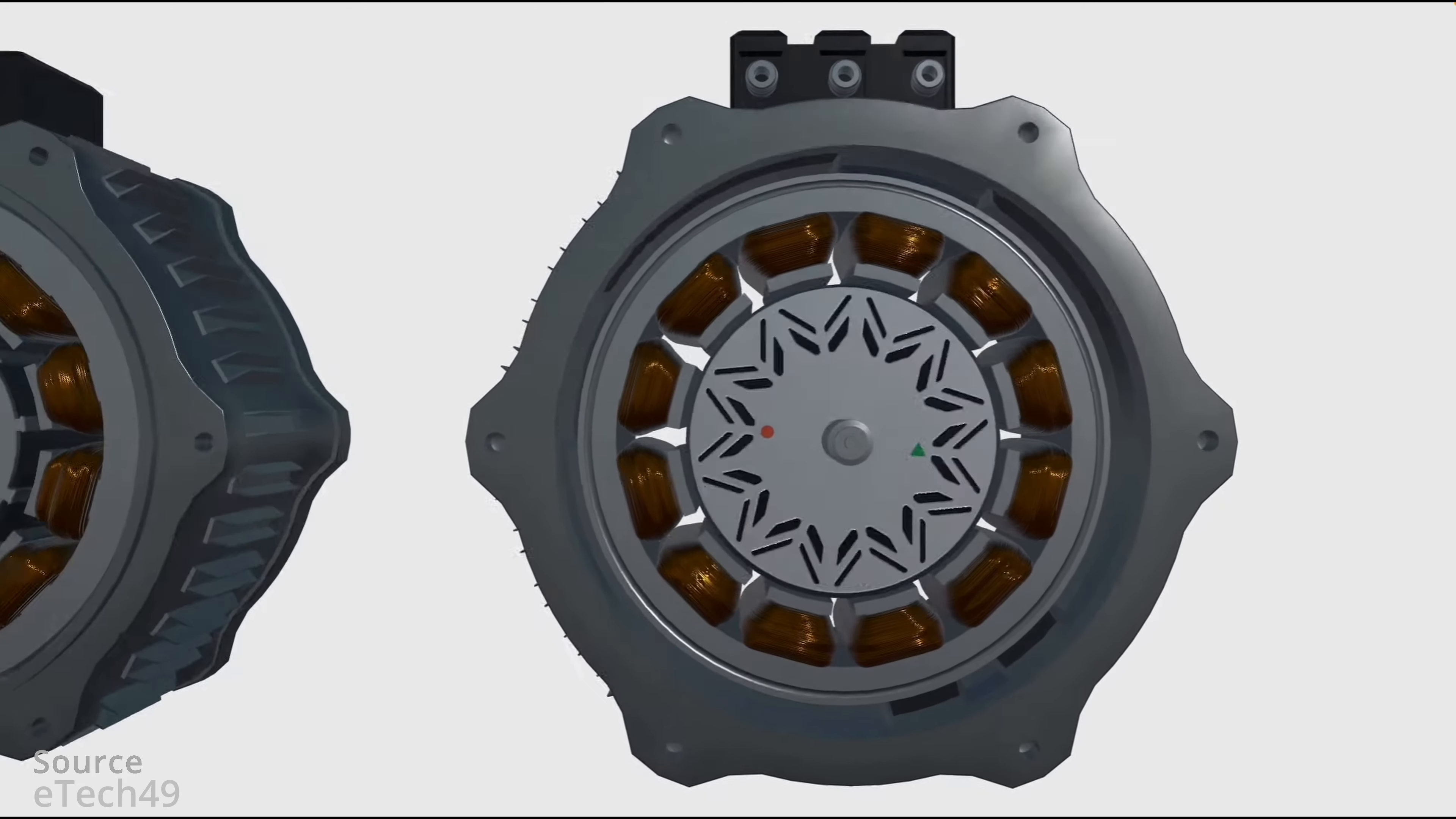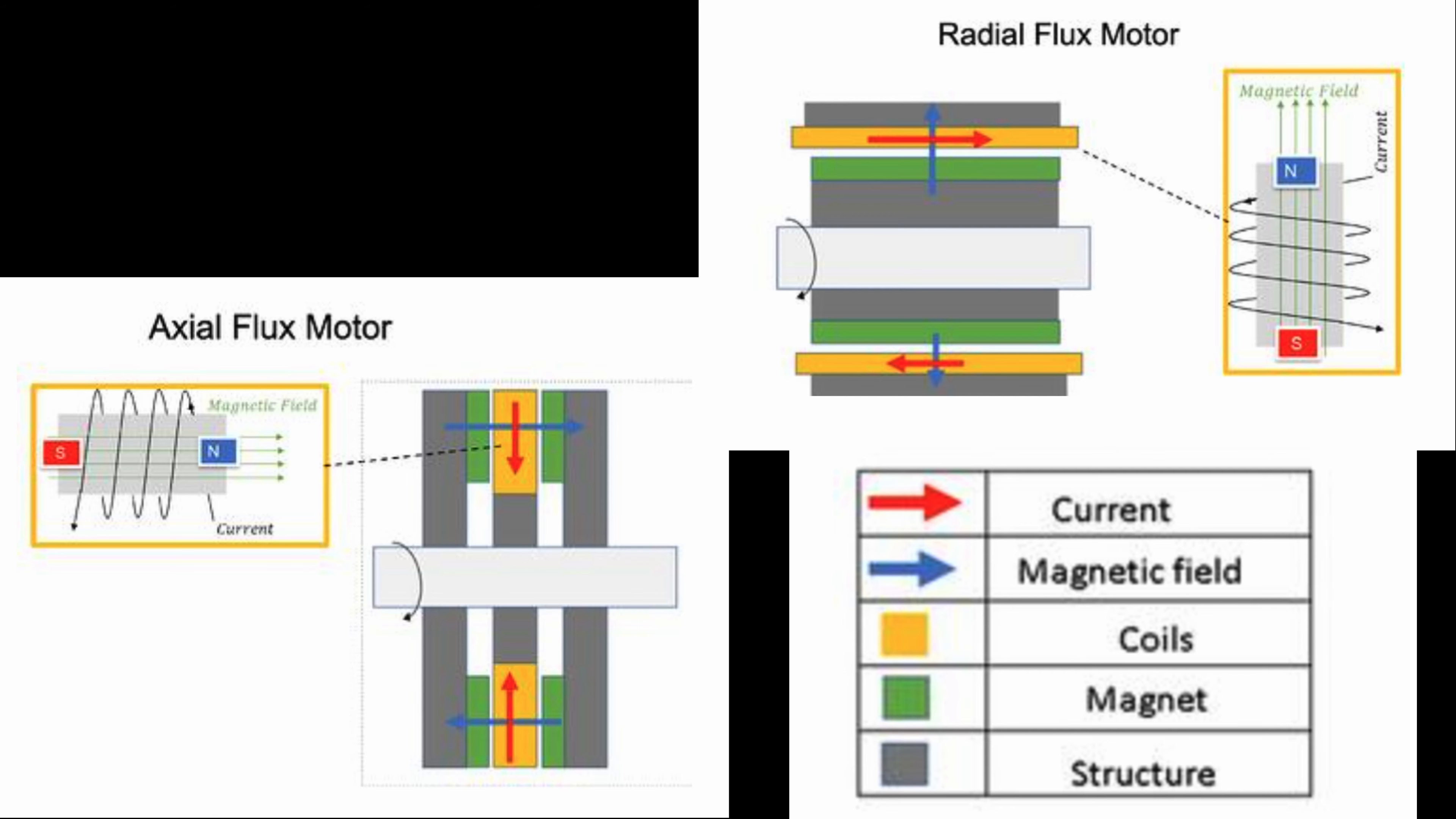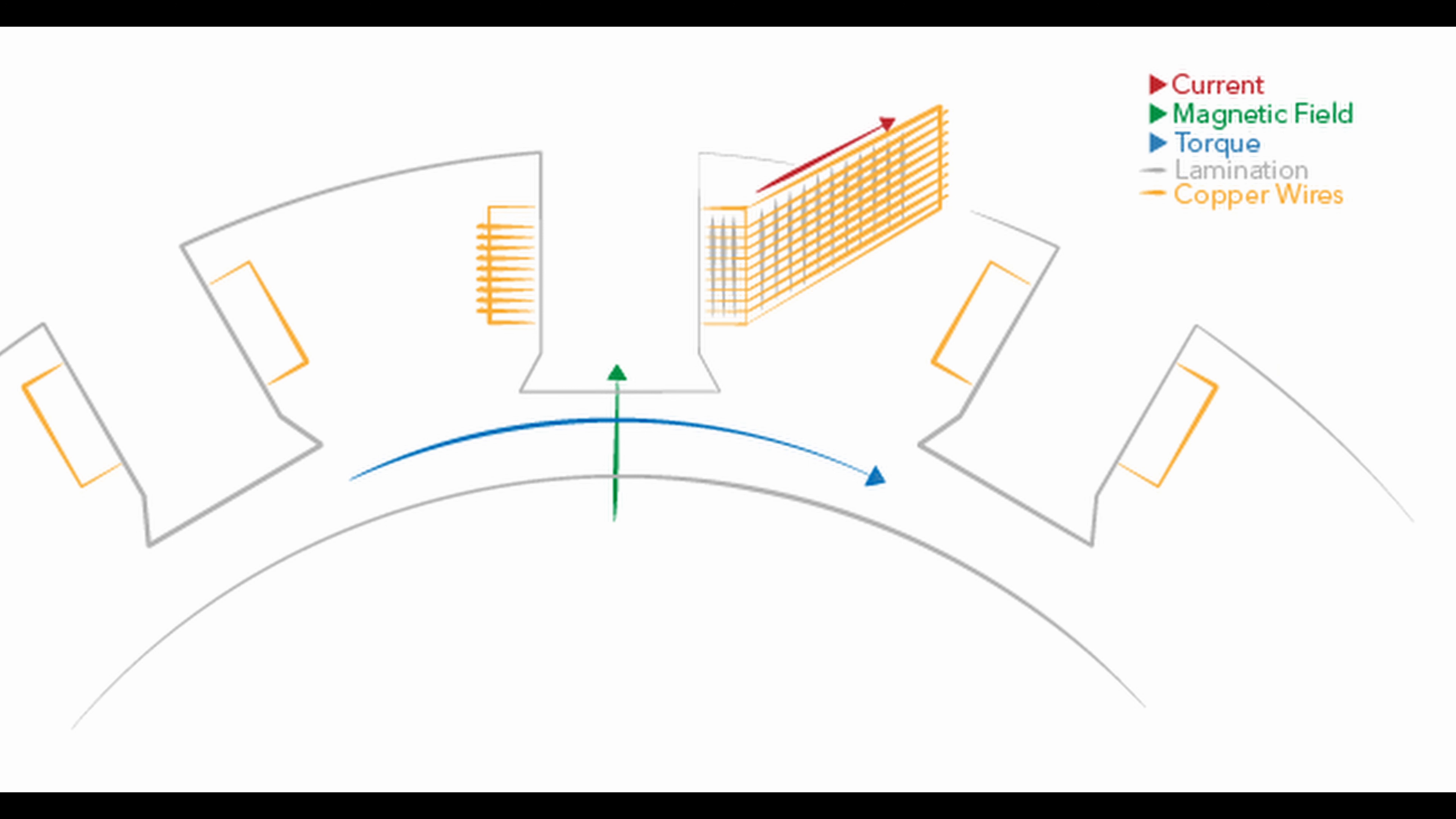The orientation of magnetic field of axial flux motor is different from radial flux machine as the stator core and their copper wires are positioned differently. The picture shows the direction of magnetic fields for both topologies, which also explains their name.